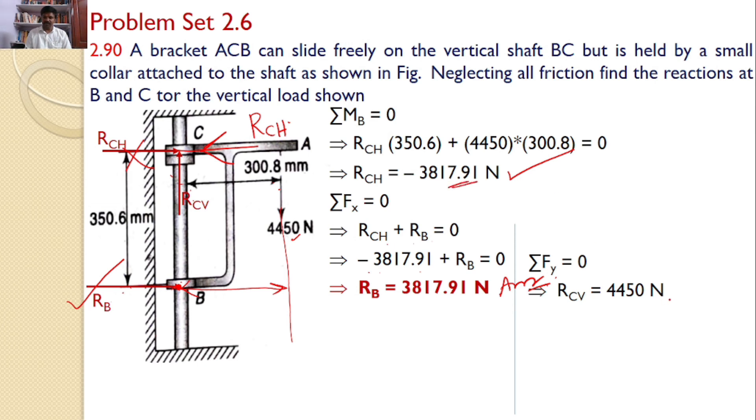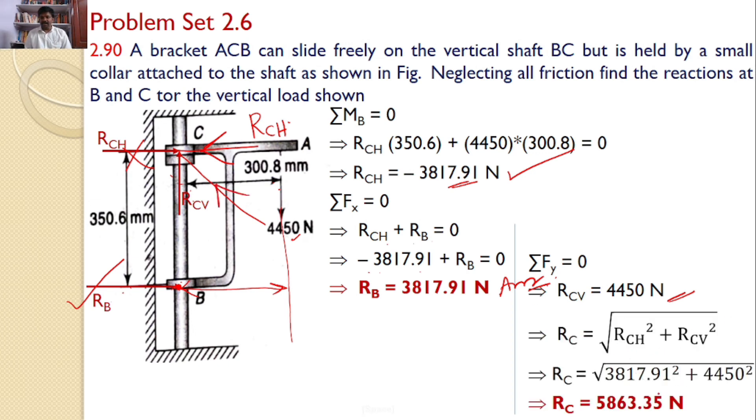We know the value of RCH and we know the value of RCV. Hence, I can find the reaction at C and that is square root of RCH square plus RCV square, and upon substituting you will get RC is equal to 5863.35 Newtons. So this is the answer for the given problem.